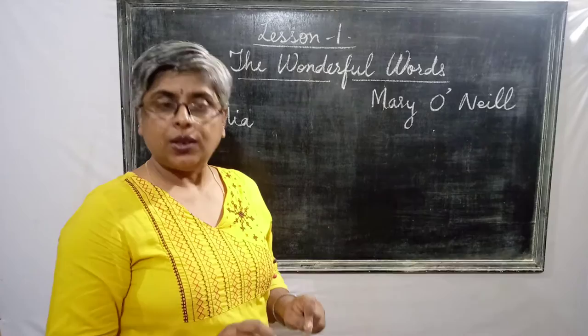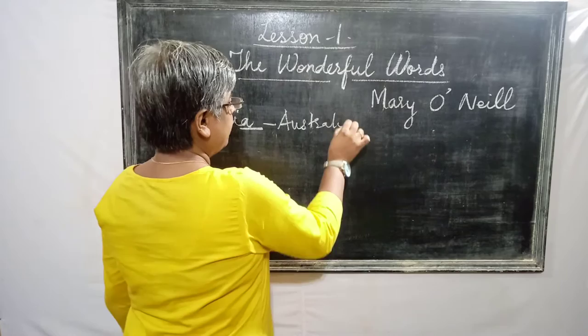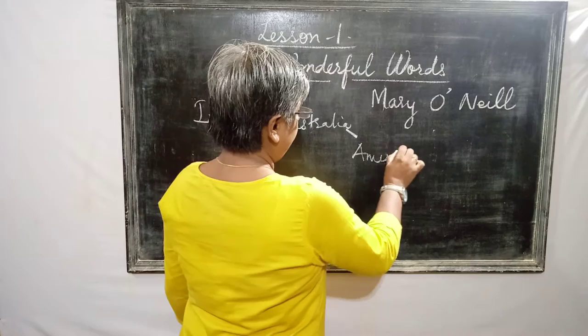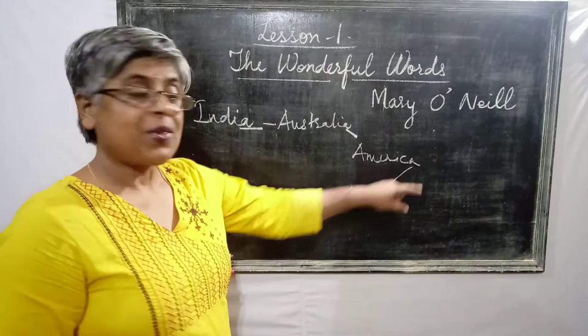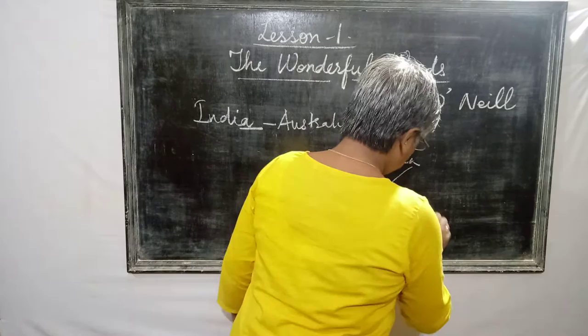These words will be only the names of countries. So, A — I will write Australia. A — America. A — Antarctica. A — Alaska. And again A — Alaska.